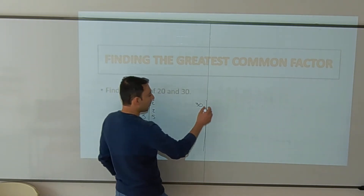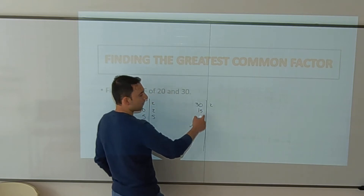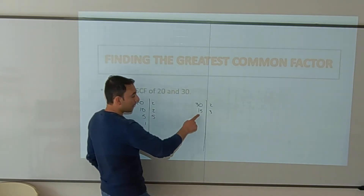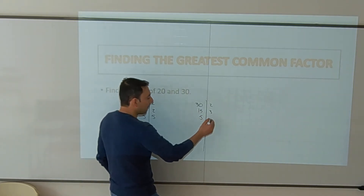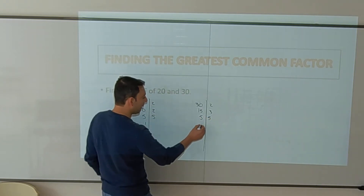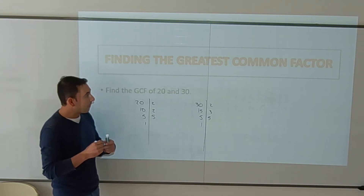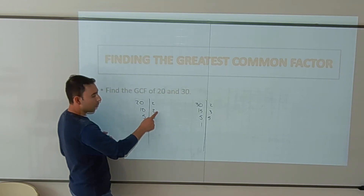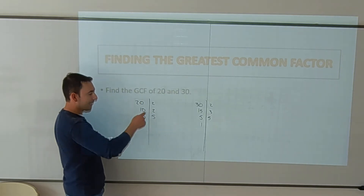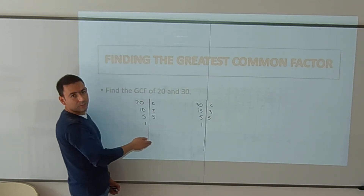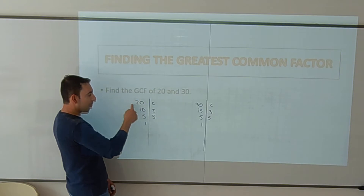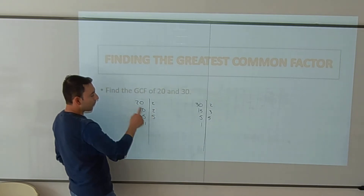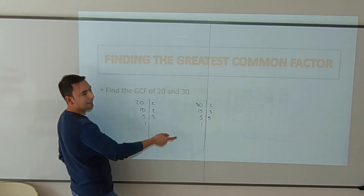Now the same for 30. 30 divided by 2 is possible, giving 15. 15 divided by 2 is not possible since it's odd, but the second prime number, 3, works: 15 divided by 3 is 5. And 5 divided by 5 is 1. So the prime factors of 20 are 2 × 2 × 5, and we can verify: 2 times 2 is 4, times 5 is 20. Correct.